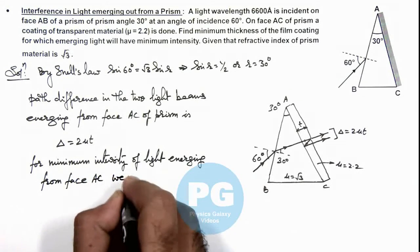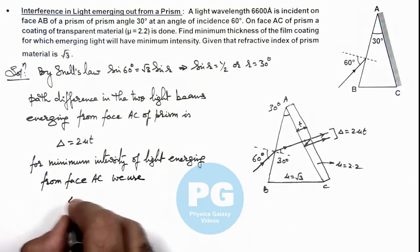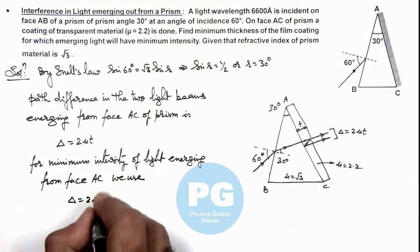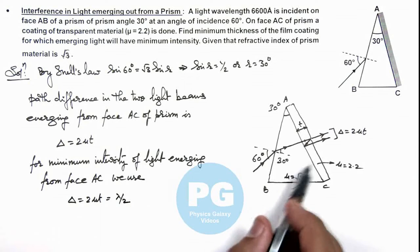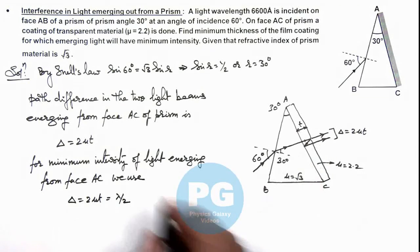We use this path difference should equal lambda by 2, as for minimum intensity it should destructively interfere.